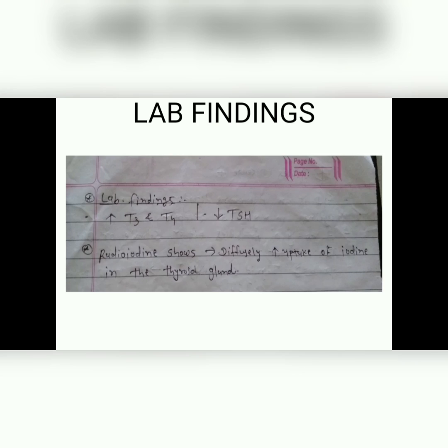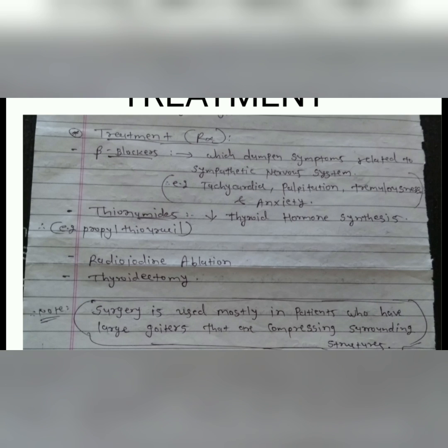Let's go to the treatment. Beta-blockers are used for relieving sympathetic symptoms related to the sympathetic nervous system, like tachycardia, palpitation, tremors, and anxiety.